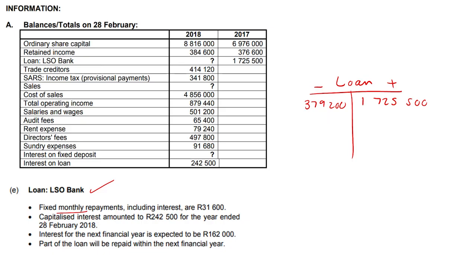Capitalized interest amounted to 242,500. The word 'capitalized' means added to the account, so this 242,500 increases our loan amount and is credited. Interest for the next financial year is 162,000 — that's in the next financial year, so we're not realizing it this year, so 162,000 goes there.